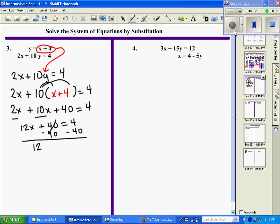So we continue, and we have 12x equals negative 36, divide both sides by 12, and we find out that x equals negative 3.